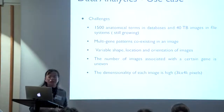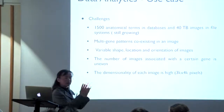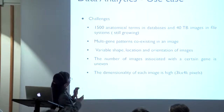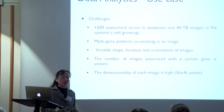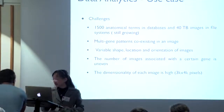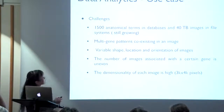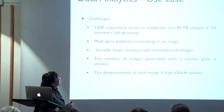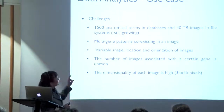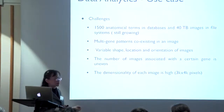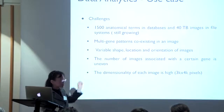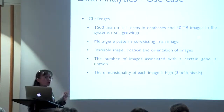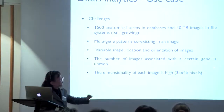The challenges we are facing: the ontology has around 1,500 terms, and the dataset is 40 terabytes. You can imagine how long manual annotation would take. Also, there are multi-gene expression patterns coexisting in the same image, variable shapes, images acquired at different positions, and the number of images associated with a certain gene is uneven. The dimensionality of each image is high — 3,000 by 4,000 pixels.